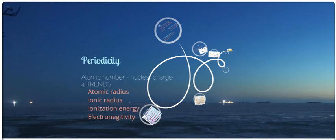When you line up the elements on the periodic table in increasing atomic number, there are repeating trends or repeating patterns. Remember that increasing atomic number increases the nuclear charge and the number of electrons. There are four periodic trends, four periodic laws that you need to know.